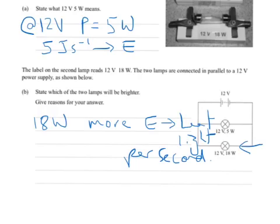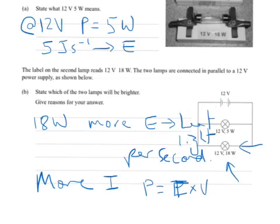The reason also, we could also talk about how there's more current. So there's more current passing through this, and you could use P equals I times V to work that out. Because they both have 12 volts in both those lamps, the power of one is 5 and the power of one is 18, so the current therefore must have that same ratio.